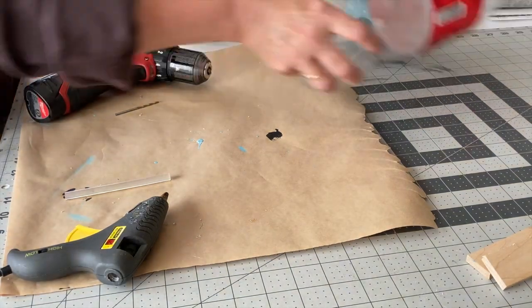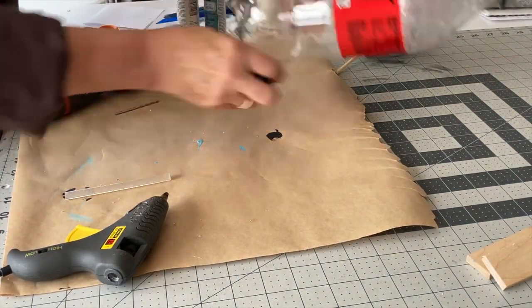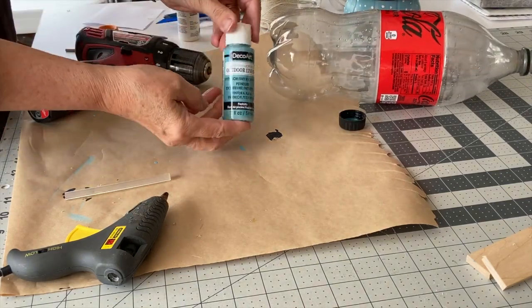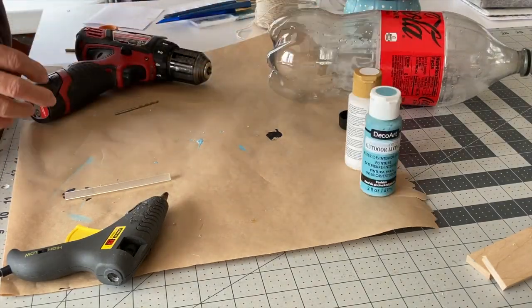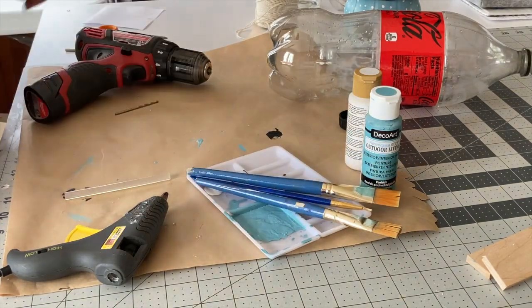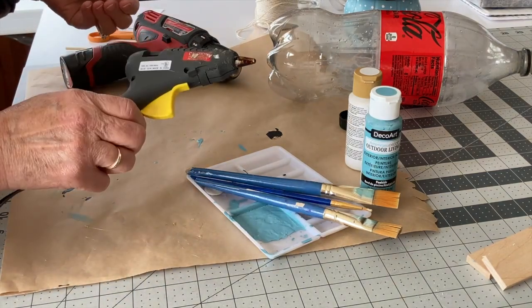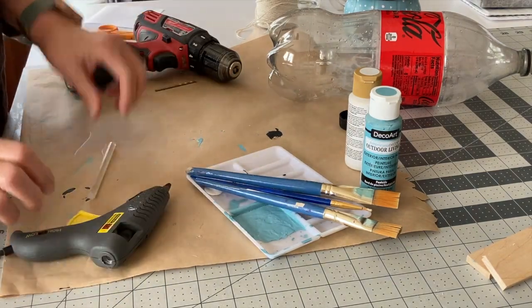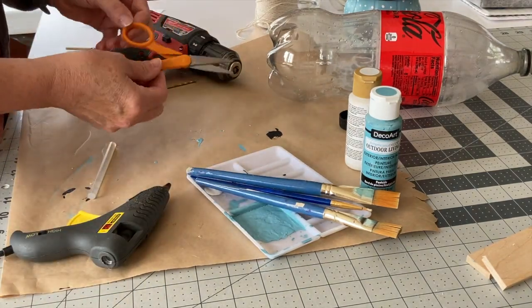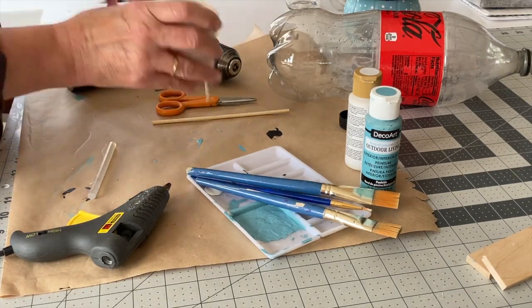First, let's take a look at the tools and supplies that you'll need to create your bird feeders. You'll need a clean and empty 2-liter pop bottle or plastic bottle, some outdoor paint, a paint tray is kind of helpful, paint brushes, a drill and a drill bit, a glue gun and glue sticks. Make sure you have plenty of glue sticks, a pair of scissors, a skewer, and some rope.